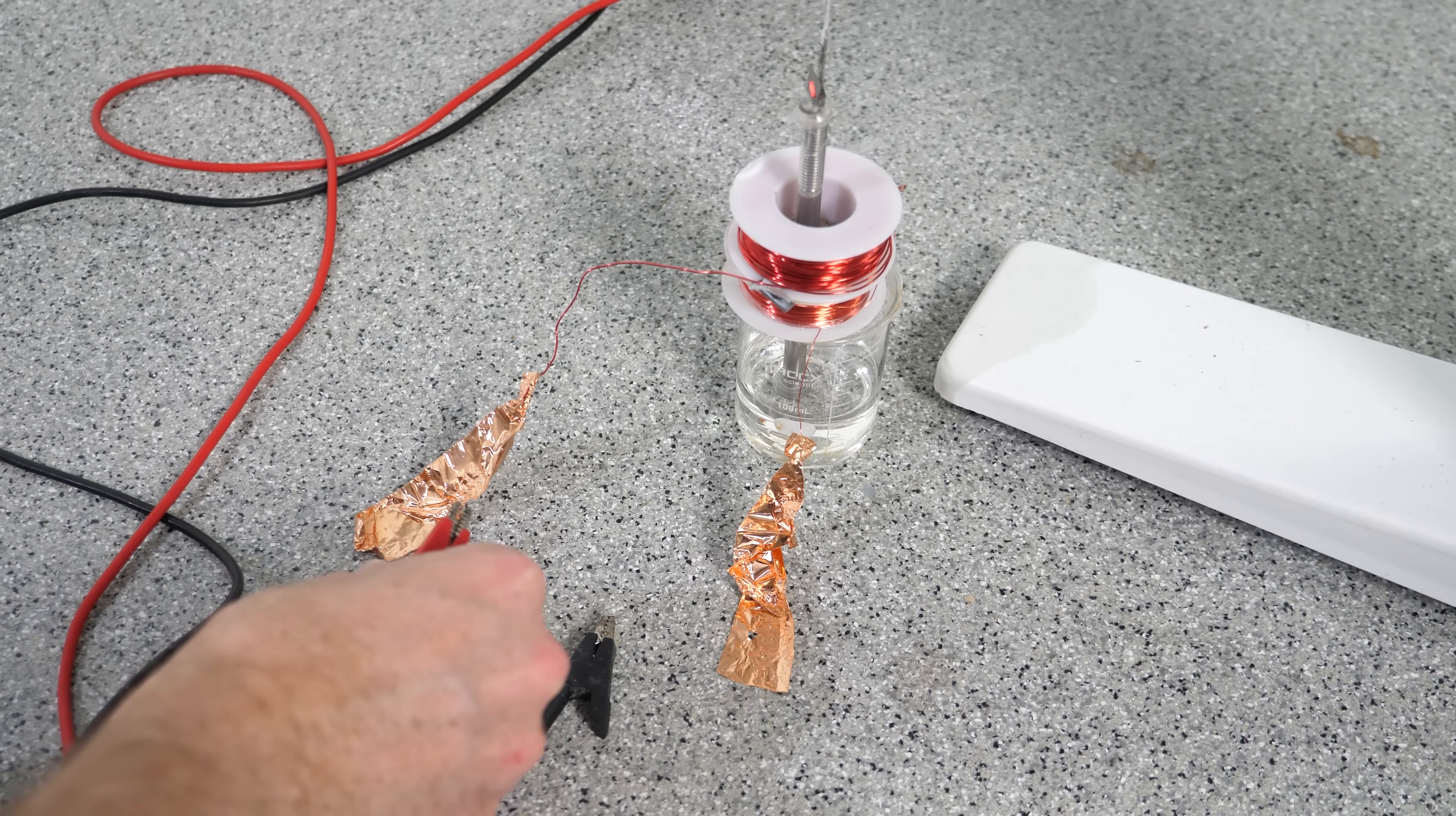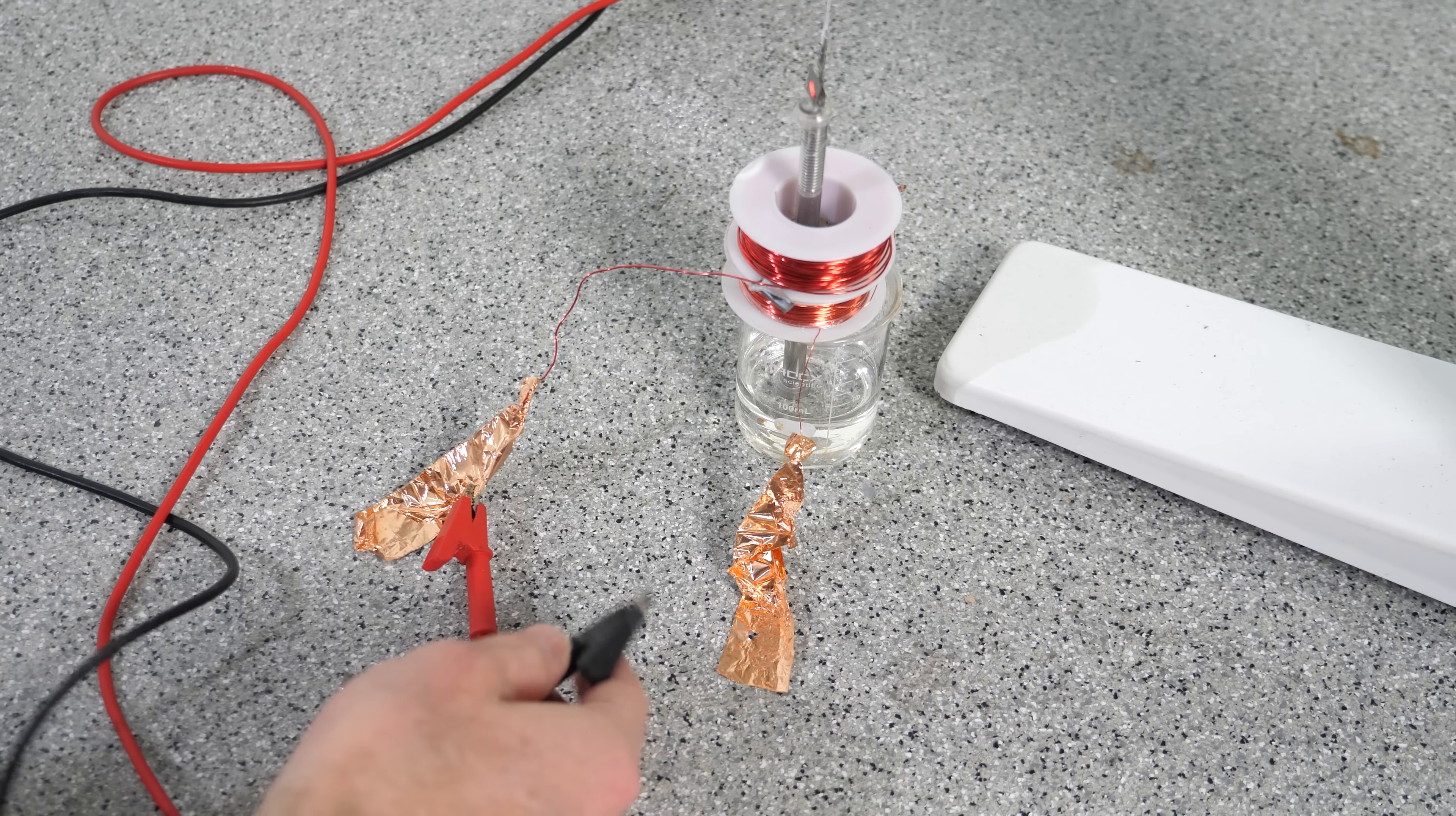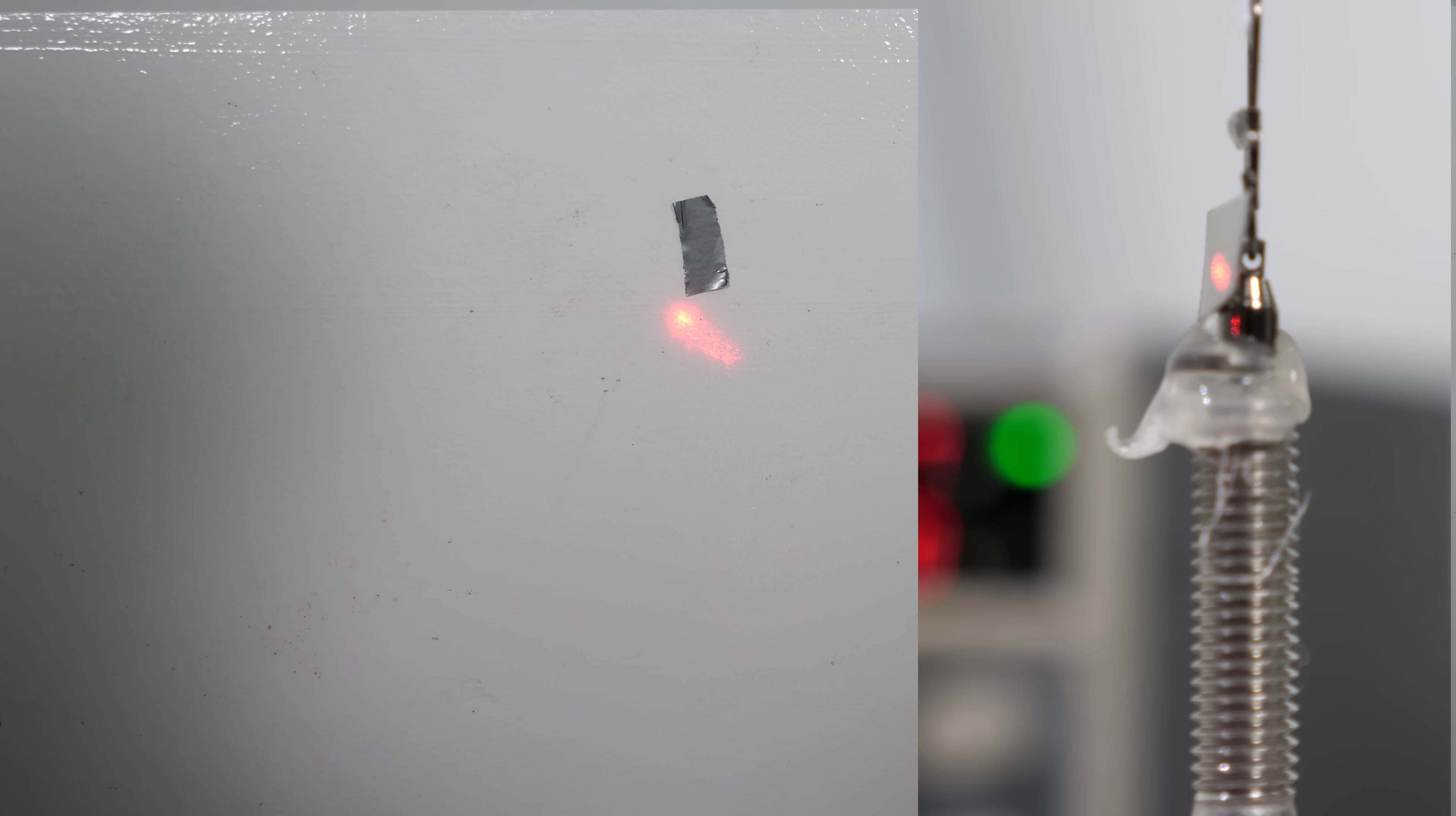And just like flipping the direction of a fan blade spun the boat, flipping electron spin caused the bolt to rotate. It's a little bit hard to see, but you can see the bolt actually rotating on the right here.